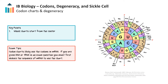A standard codon chart displays the 64 possible codons and indicates the amino acid encoded. The chart also indicates the three codons that serve as stop signals, or termination codons, marking the end of the polypeptide chain.